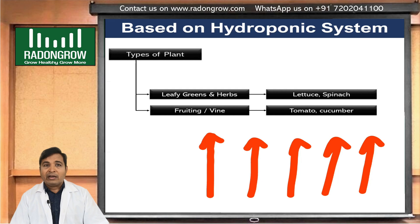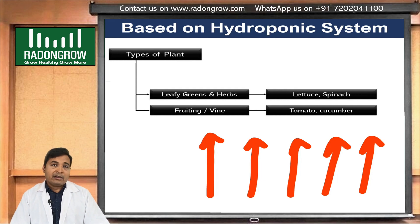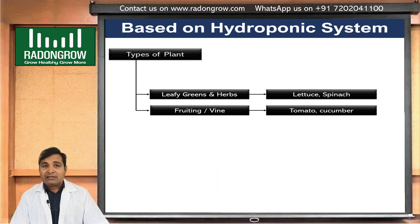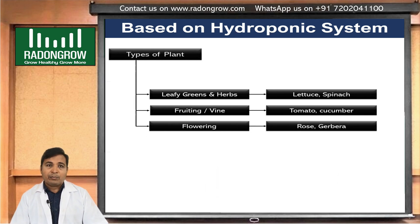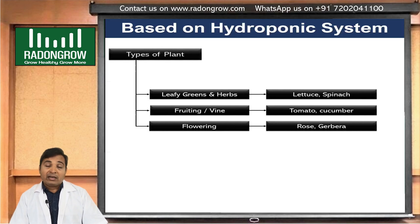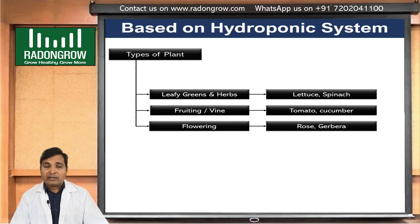For flowering plants, we will have to check the height of the plant, and based on the height and nature of the plant, we will select a vertical or horizontal system. In a horizontal system, we have the bucket system, trough system, and many other systems, which we will discuss in upcoming episodes.